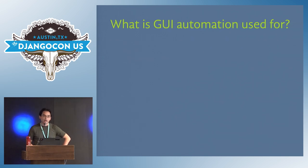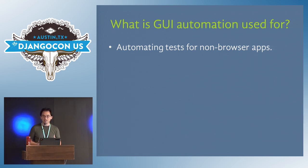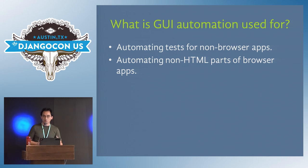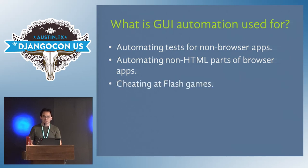What is GUI automation used for? Selenium is great for automating browsers and web apps. GUI automation is great for automating everything else — any desktop application, or even inside a browser for things like Flash or HTML5 canvas where you need to click somewhere that isn't an HTML element. But the best thing for GUI automation is writing bots to cheat at Flash games.